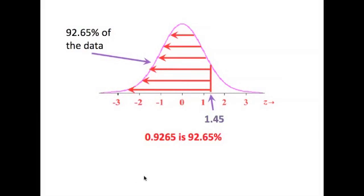We will also make one very clever little adjustment here. Since 0.9265 is in fact 92.65%, we will begin to refer to these areas as percents. 92.65% of the data lies to the left of a z-score of 1.45.